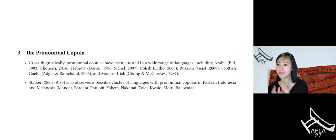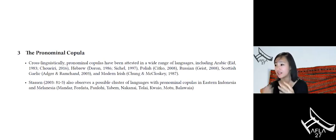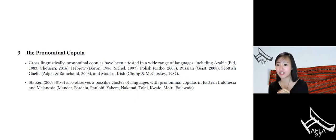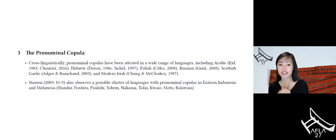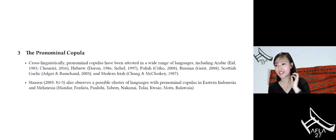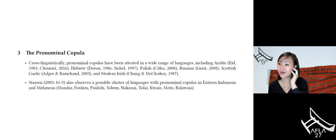Now we'll go into more depth on each construction specifically, providing more evidence for why it's a PredP and an adnominal construction respectively. Pronominal copulas have been attested in a huge range of languages — in Semitic, Slavic, Gaelic, and even in Austronesian. Sasson observes a possible cluster in Eastern Indonesia and Melanesia itself. What is unusual, however, is that in all of the languages where pronominal copulas are attested, it is extremely rare for them to show person agreement.